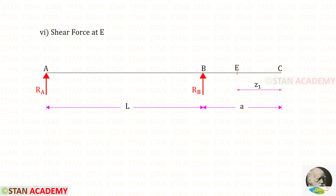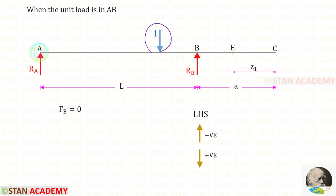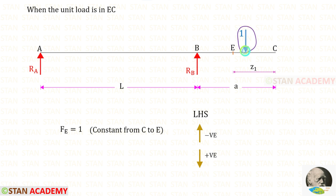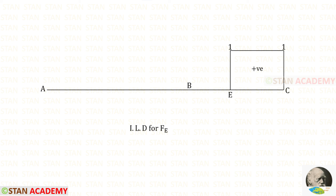Now we are going to draw the ILD for the shear force at point E. Point E is located at a distance of Z1 from C. When the unit load moves from A to B, the shear force at E will be 0 because in EC there is no load. When the unit load moves from B to E, the shear force at E will also be 0. When the unit load moves from E to C, the shear force at E will be 1 and it will be constant from C to E. Here you can see the ILD for FE.